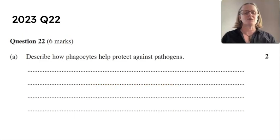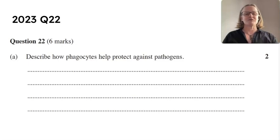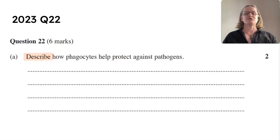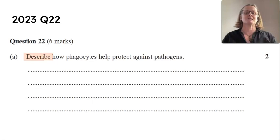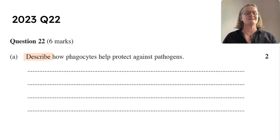Let's have a look at a question from 2023, paper question 22 — this is obviously module 7. It's a describe question, so a describe question is all about the characteristics and the features of what the question is about. We're going to need to describe two aspects: the nature and the characteristics of the features — and this is about phagocytes and protecting against pathogens.